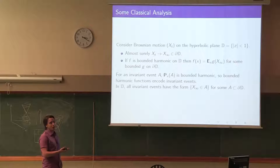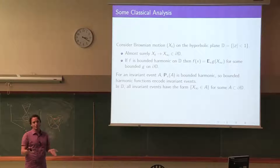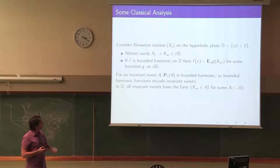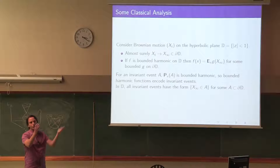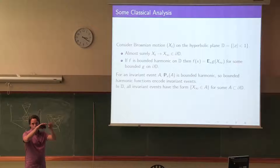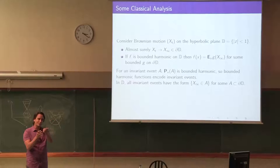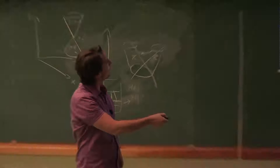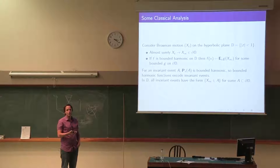Consider Brownian motion on the hyperbolic disk — this is a classical fact. You have the disk in two dimensions, you run the Brownian motion inside. It's a fact that you reach the boundary and stick to it. If you have any harmonic function on the disk, it's actually an extension of a harmonic function on the boundary. Any bounded harmonic function on the disk can be represented as the expected value of where your Brownian motion exits.